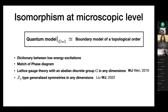This isomorphism works for all lattice gauge theories with an abelian discrete group G in any dimensions. We can also generalize to cases with higher-form symmetries and subsystem symmetries, and we have proved concretely that for Z2-type generalized symmetries we also establish this isomorphism. Essentially, if you give me a quantum model with a Z2-type generalized symmetry, I can output a topological order model where the boundary corresponds to the model you gave me.